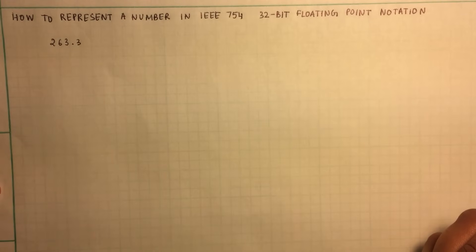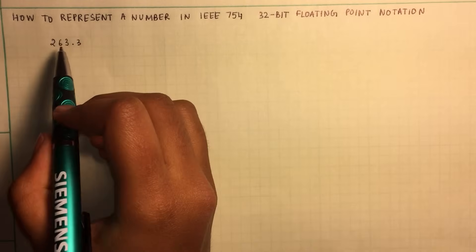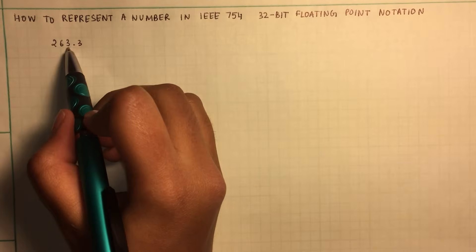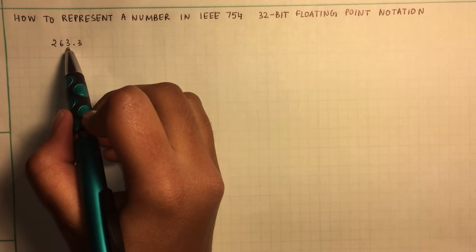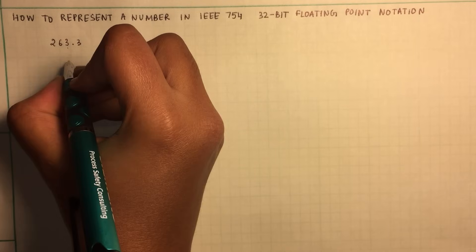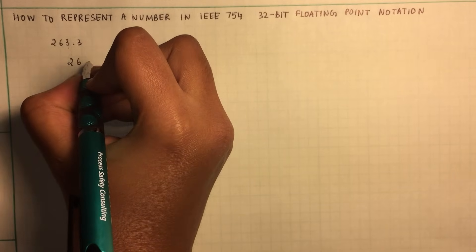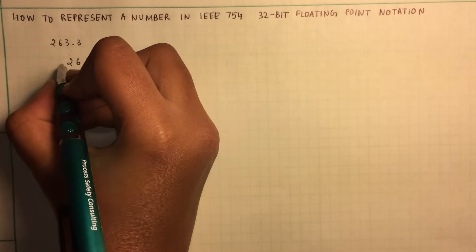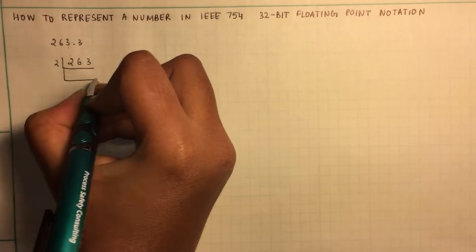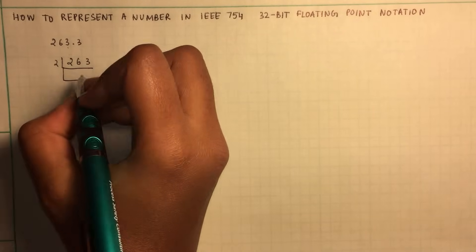The first step is to convert the number into its binary form. We know how to convert 263 to binary form — it's very simple. You just keep dividing it by 2 and keep track of the remainder.